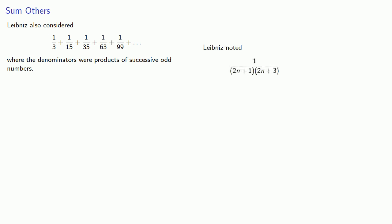To sum this series, Leibniz noted that this reciprocal of the product of successive odd numbers, 1 over 2n plus 1 times 2n plus 3, could in fact be rewritten as a difference.